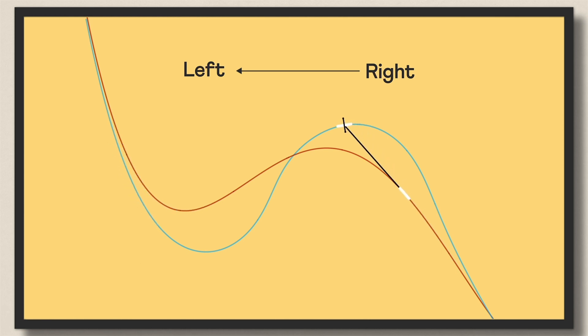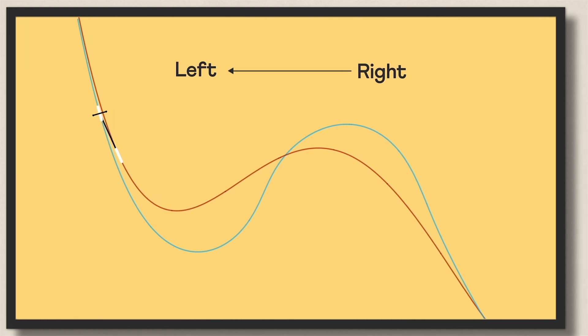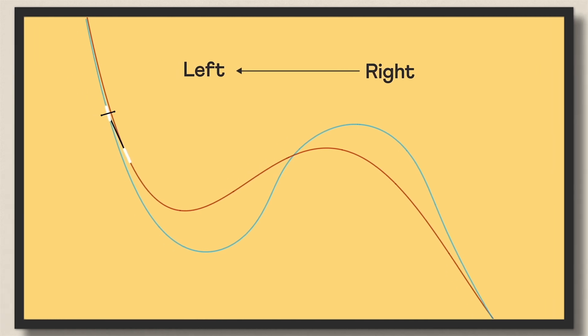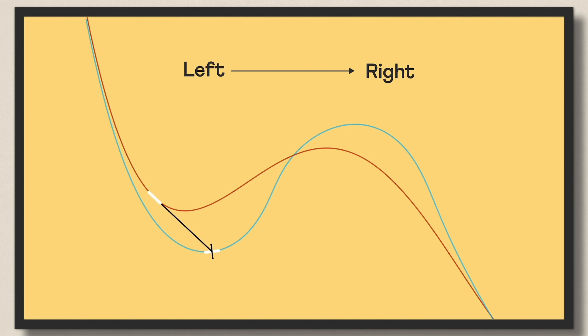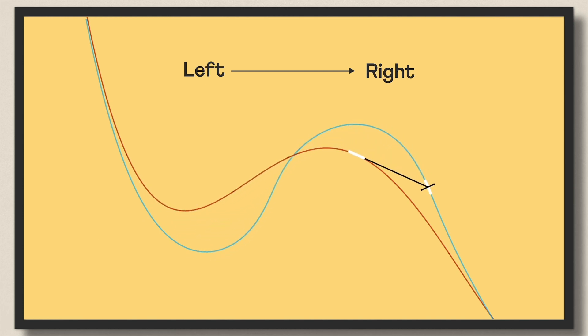Notice something weird in that case? The distance between the front and back wheels keeps changing as the bike moves — and that's not possible. The distance between the wheels should remain fixed, as in the left-to-right case. That means the bike was actually moving from left to right.